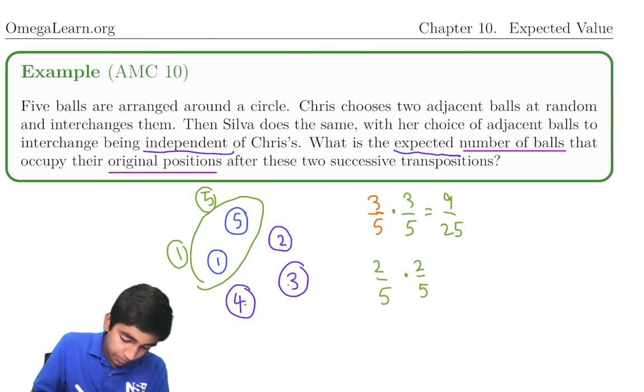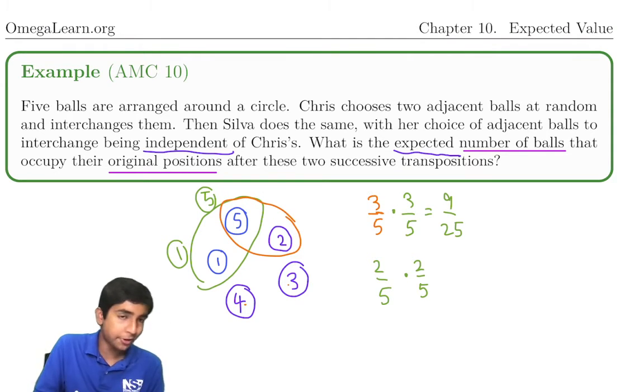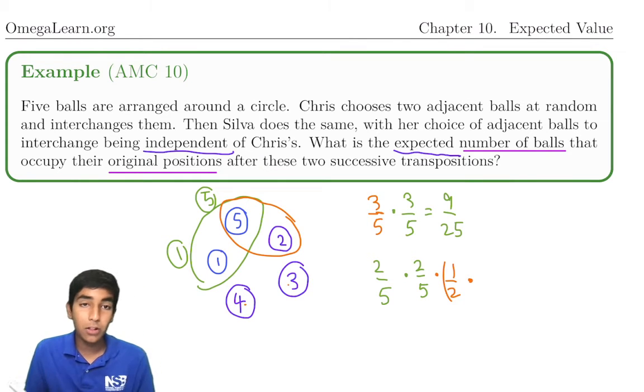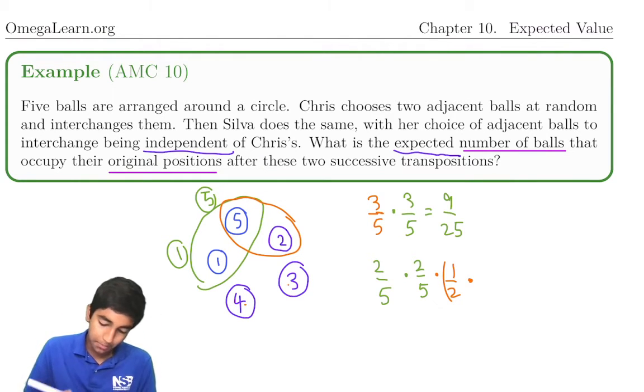But what other ball would Silva be picking in that case? If Silva then swaps five and two, then five will not be returning to its original position. So in this half chance, five ball will be going two places away from its home. So times zero.